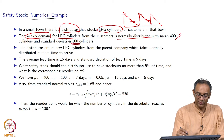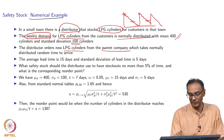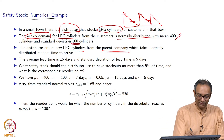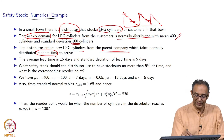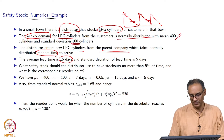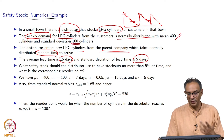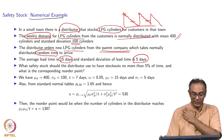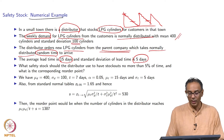The distributor orders new cylinders from the parent company. The parent company's delivery takes a random amount of time. The average lead time is 15 days and the standard deviation of lead time is 5 days. We assume the lead time is also normally distributed, just like the demand.